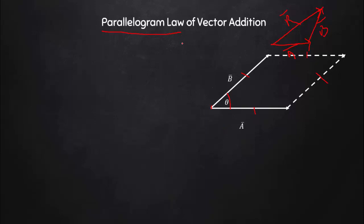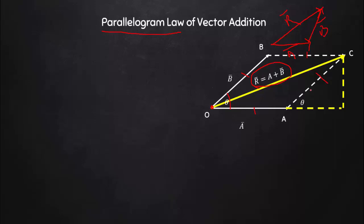So in the parallelogram law of vector addition, the basic structure is a parallelogram, and the diagonal of that parallelogram gives you the resultant — the diagonal starting from the common point of both vectors. To prove this, we drop a perpendicular from point C down to an extension of side OA. We assign names to all points and note that if the angle between the vectors is theta, then the corresponding angle here is also theta.